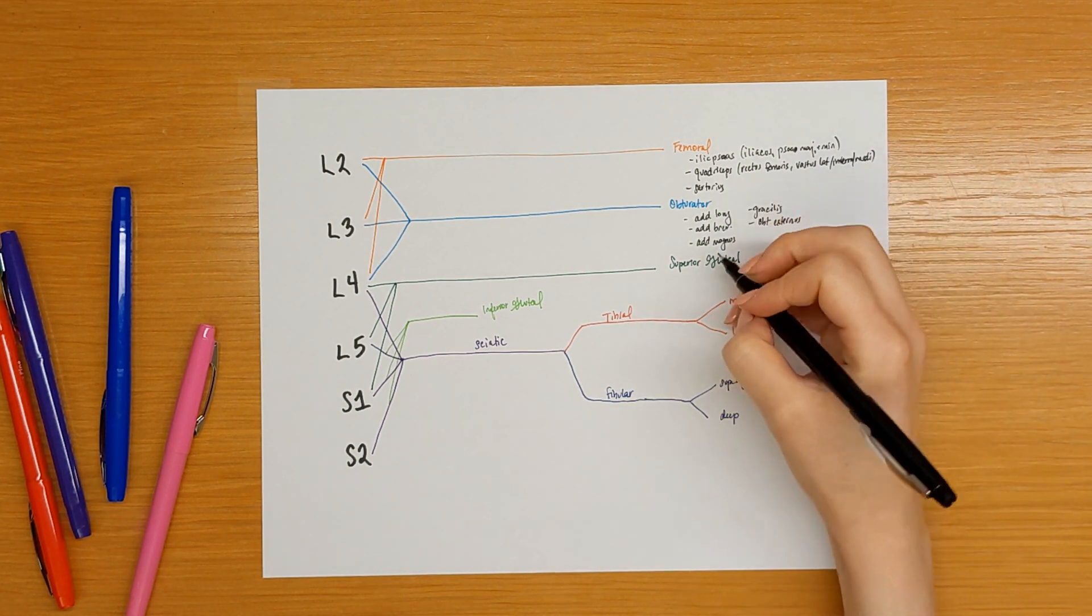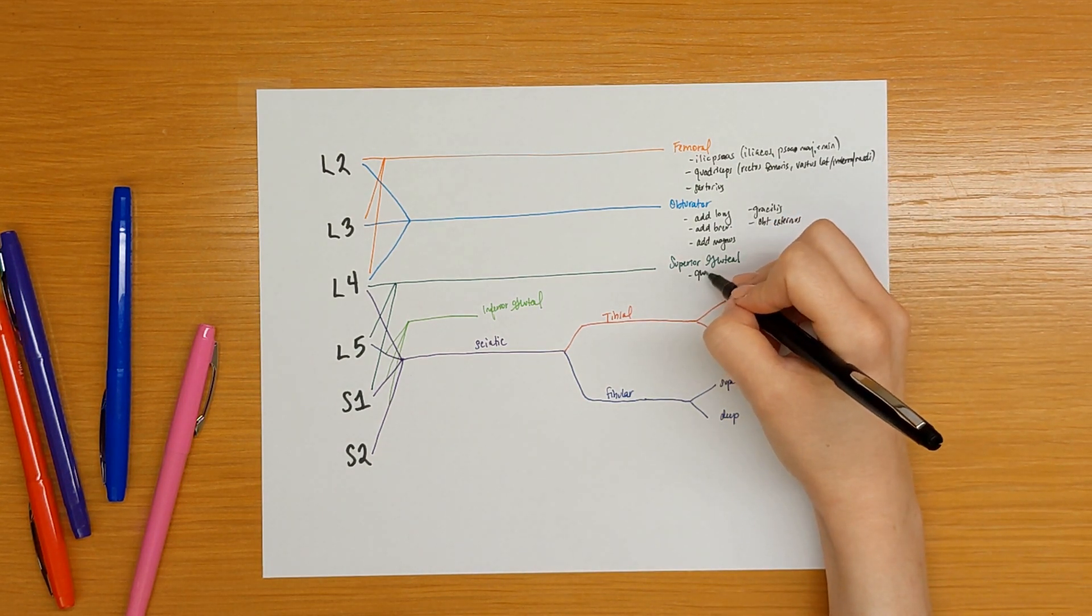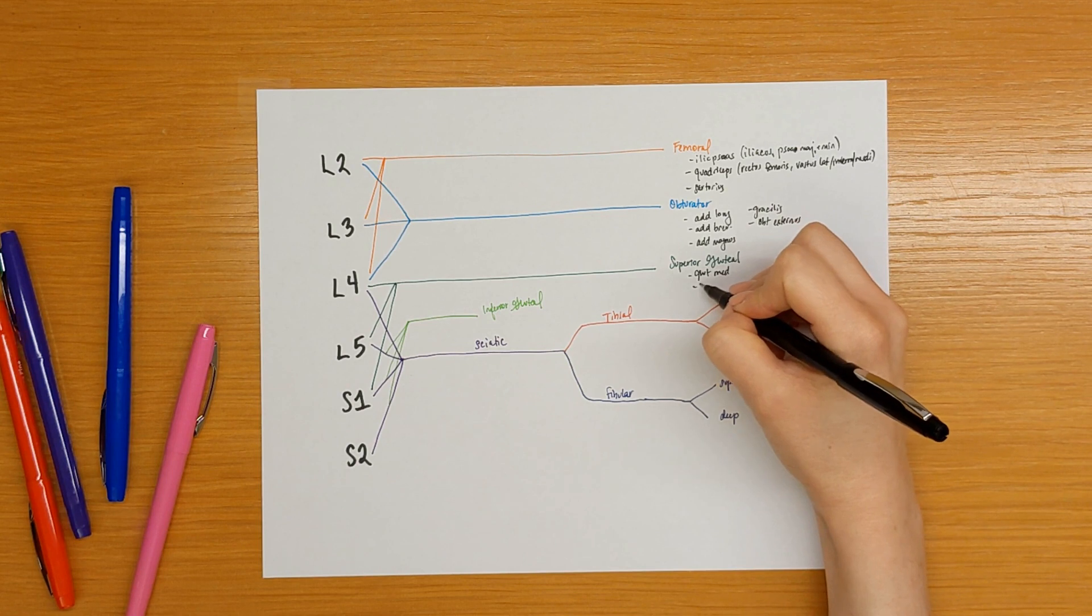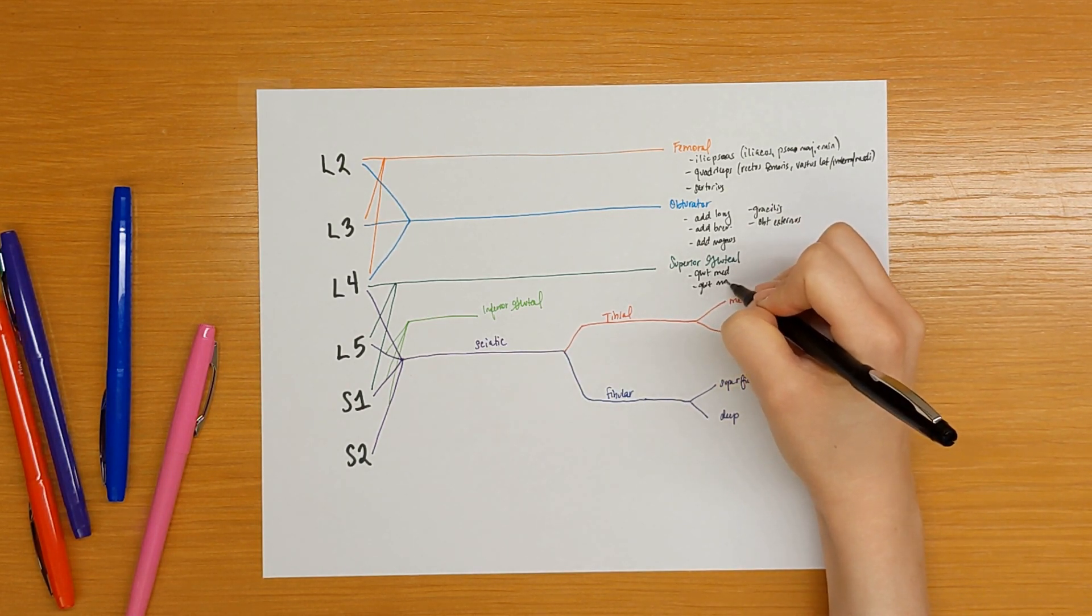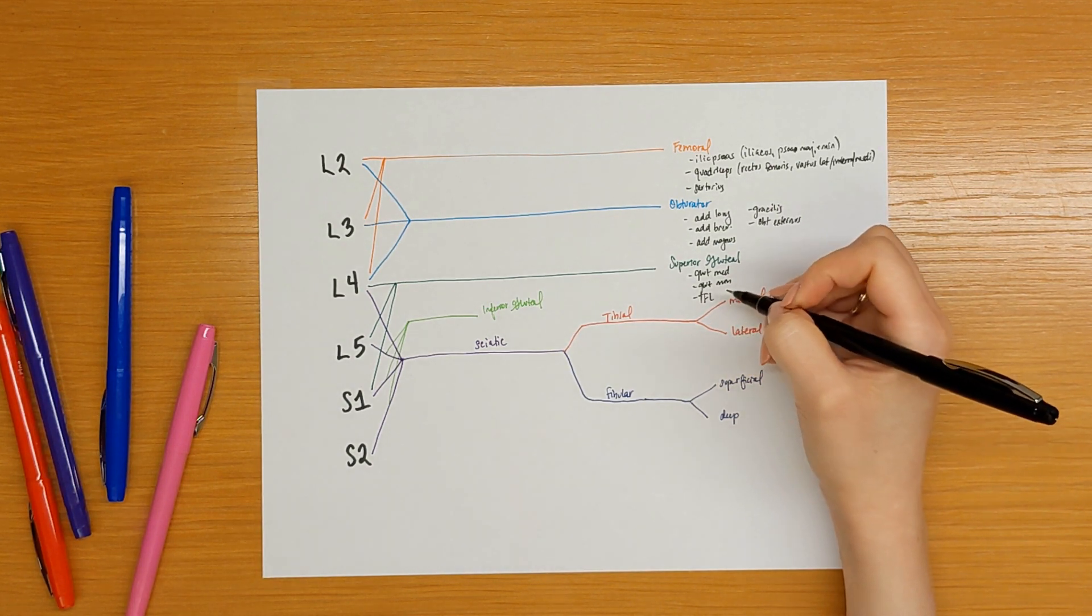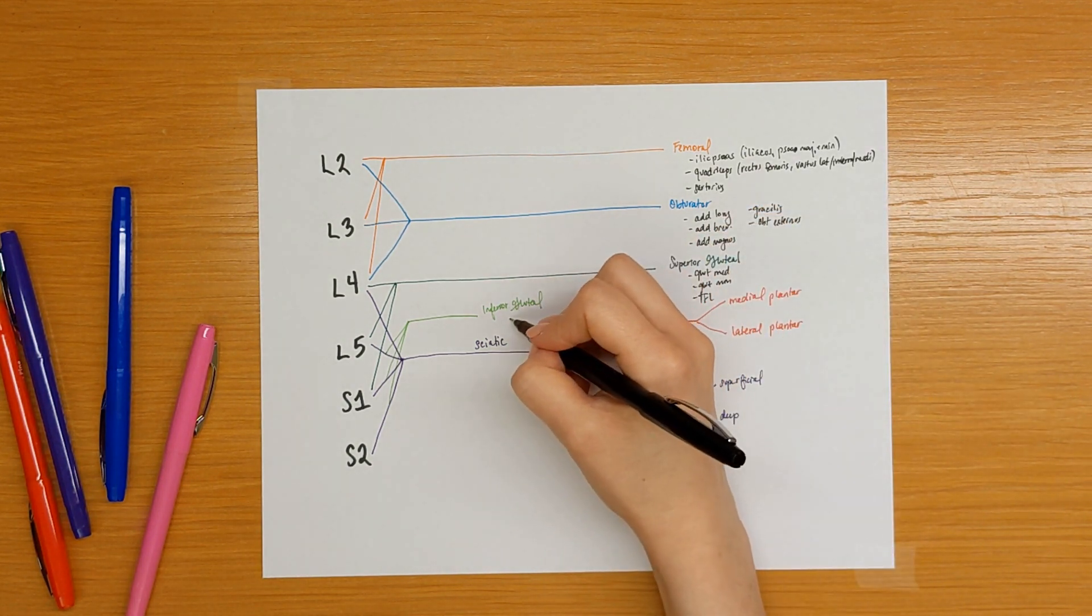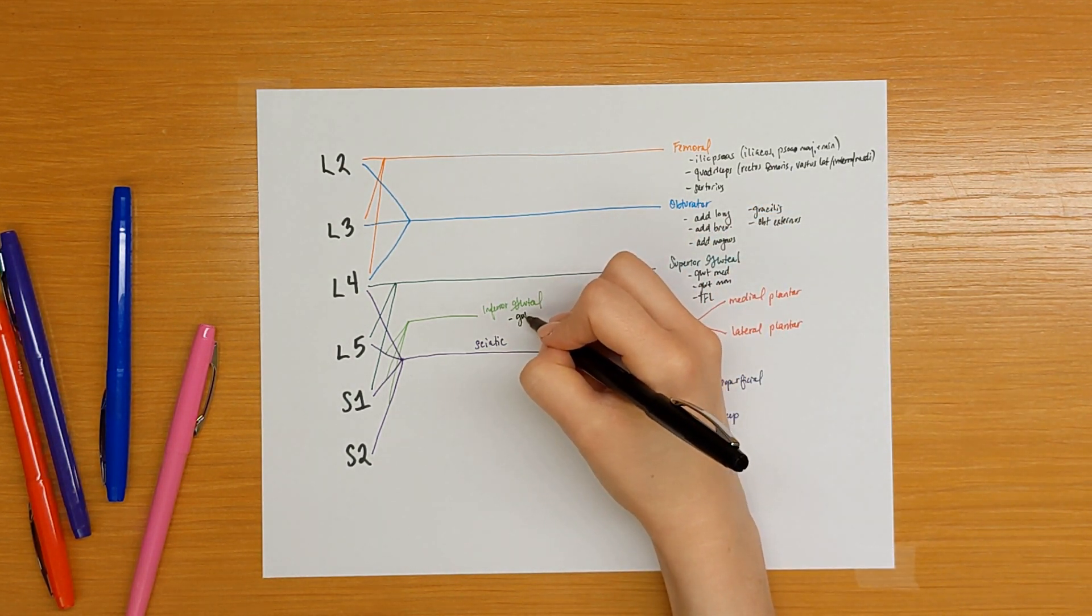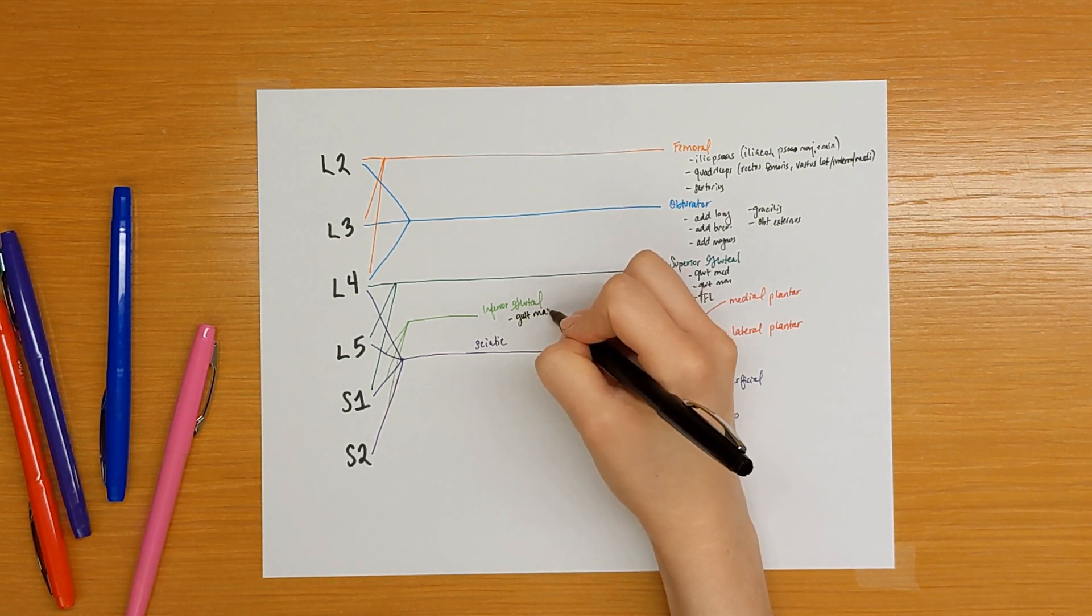The superior gluteal nerve innervates the gluteus medius, gluteus minimus, and the TFL, tensor fasciae latae. The inferior gluteal innervates the gluteus maximus.